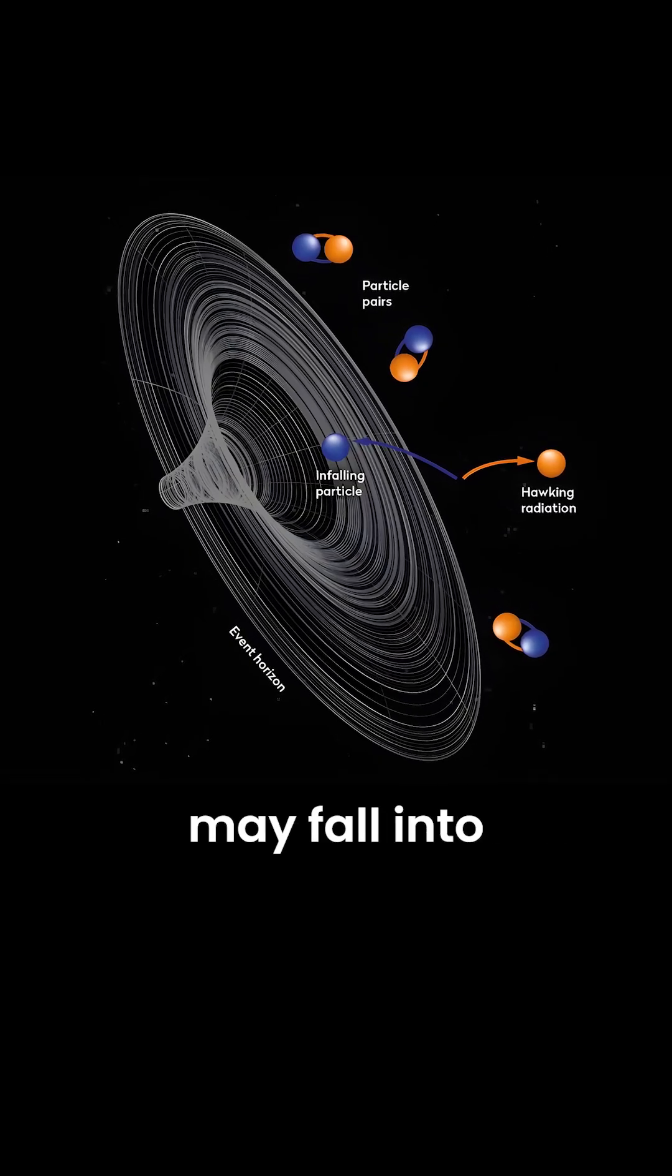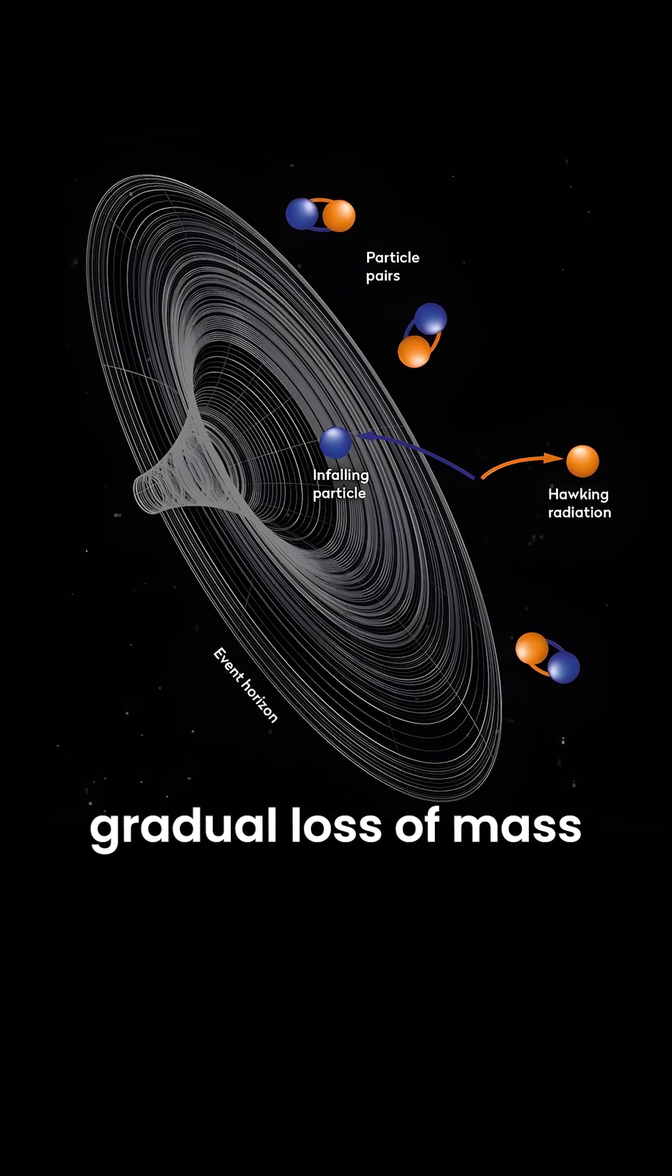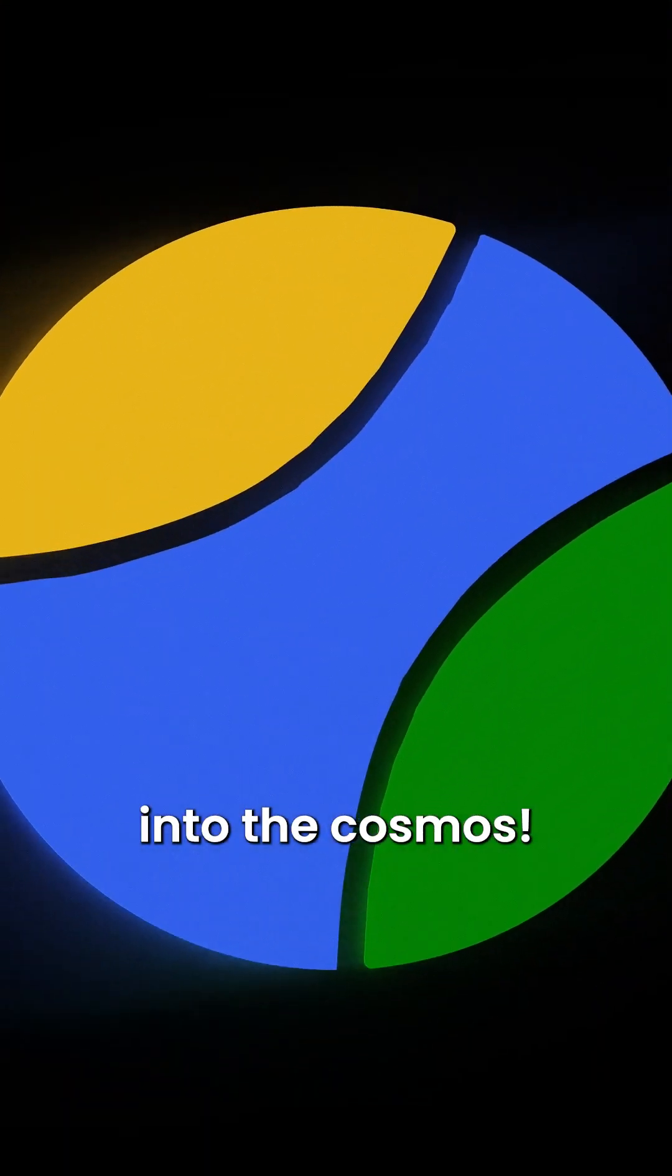One of the particles may fall into the black hole while the other escapes into space, resulting in a gradual loss of mass over a long time. Subscribe for more glimpses into the cosmos.